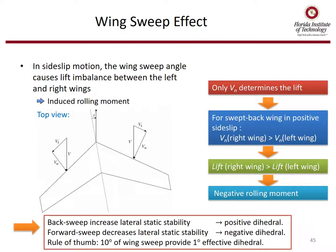In sideslip motion, the wing sweep angle causes a lift imbalance between the left and right wings, inducing a rolling moment. Swept back wings increase lateral static stability — positive dihedral effect. Forward swept wings like the X-29 decrease lateral static stability — negative dihedral effect. The rule of thumb: 10 degrees of wing sweep produces one degree of effective dihedral.